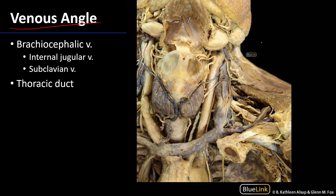Now on the right side of the body — and we can't see this here — but entering into the vicinity of the right venous angle, we have the right lymphatic duct. That right lymphatic duct is going to drain the lymph from the right head and neck, the right upper limb, and the right side of the thorax.